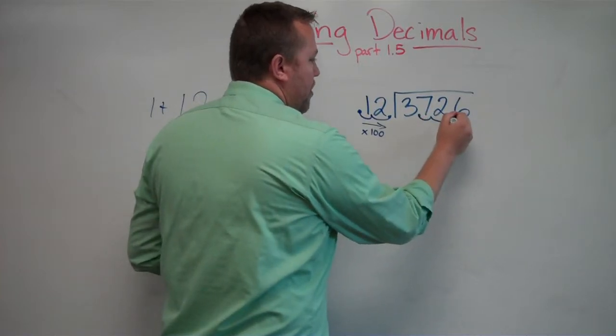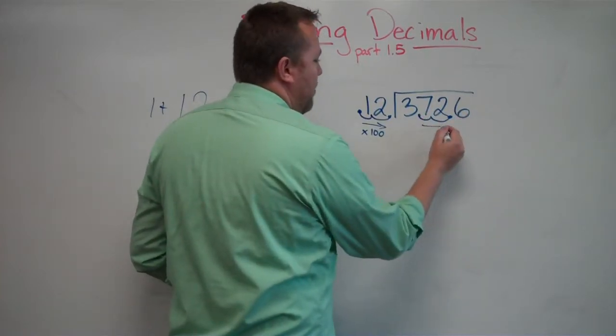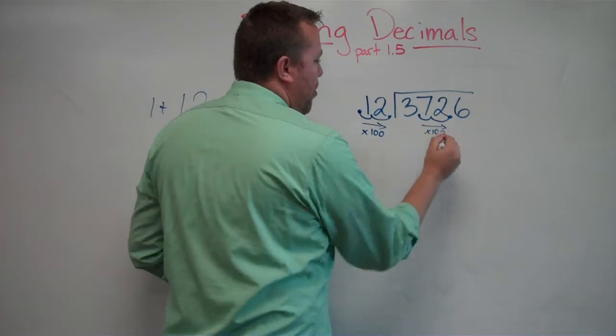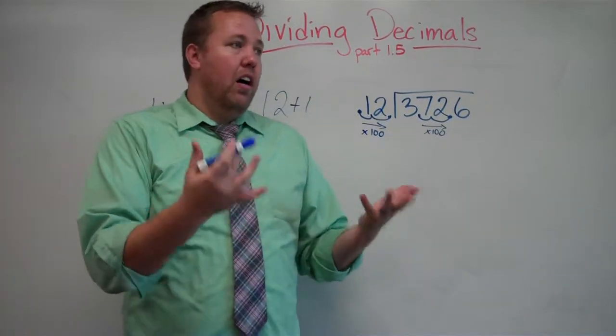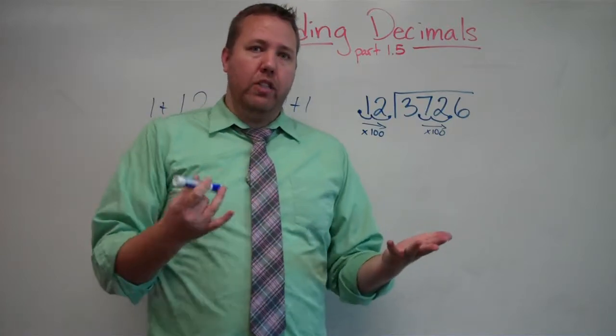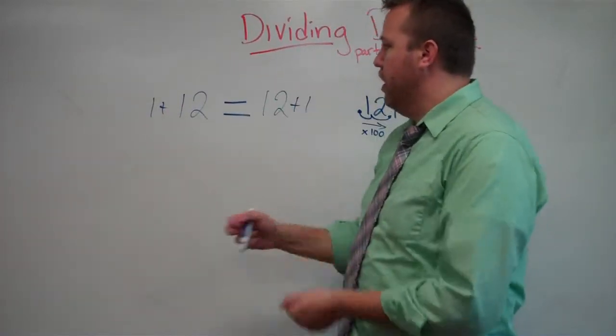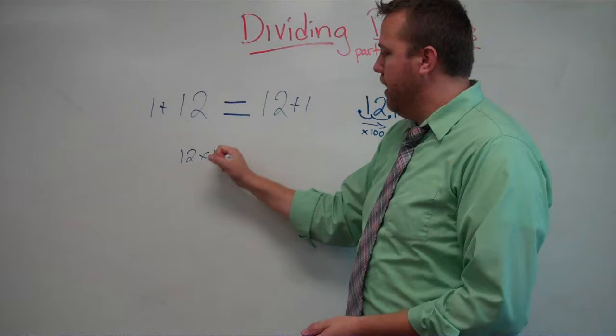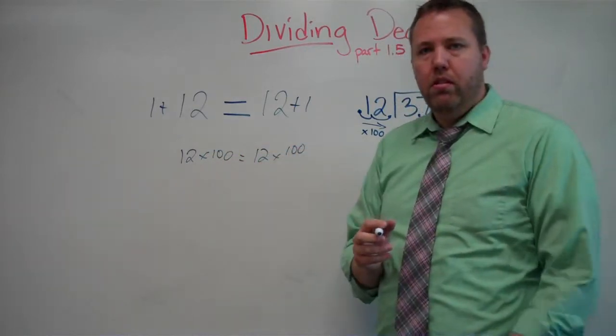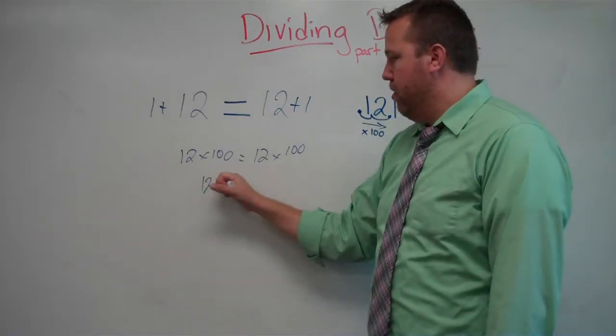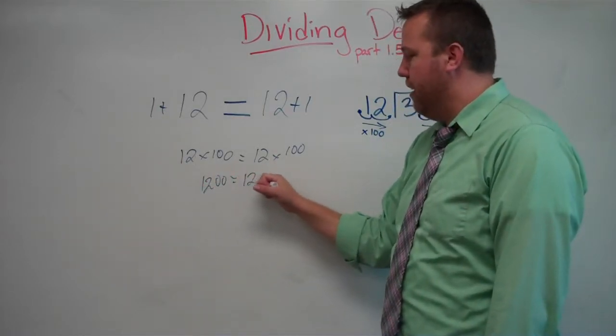Remember, what I do to one side, I need to do to the other side. So, I move the decimal over twice or I'm timesing by 100. Okay, I'm doing the same thing to keep it on an equal ratio. Okay, there's still equivalent 12 times 100 equals 12 times 100. Okay, that's 1,200 equals 1,200.